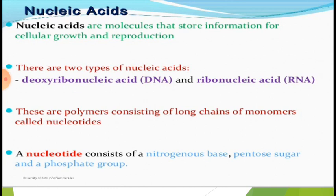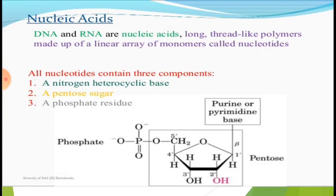The ribose sugar contains oxygen, and majorly pentose sugar is involved. These are polymers consisting of long chains of monomers called nucleotides. Nucleotides consist of building blocks which include nitrogenous bases, pentose sugar, and a phosphate group. DNA and RNA are nucleic acids — long thread-like polymers made up of a linear array of monomers called nucleotides. All nucleotides contain three components.